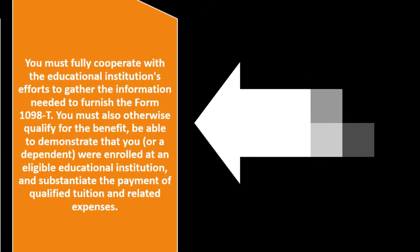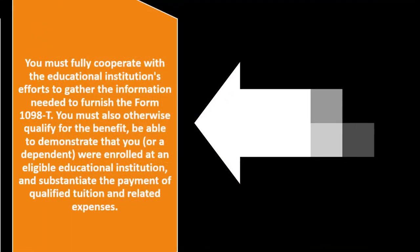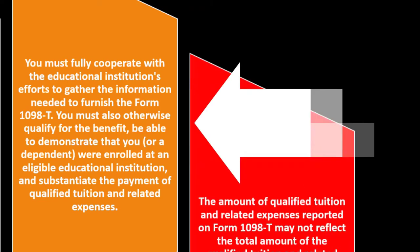You must fully cooperate with the educational institution's efforts to gather the information needed to furnish the Form 1098-T. For instance, if they need your address to fill it out, you have to provide it — they can't complete the 1098-T without the necessary information. You must also otherwise qualify for the benefits, be able to demonstrate enrollment at an eligible educational institution, and substantiate payment of qualified tuition and related expenses.